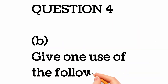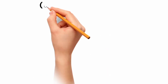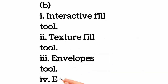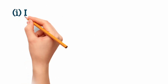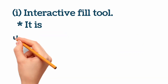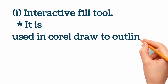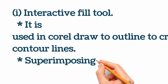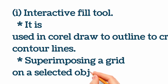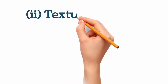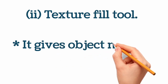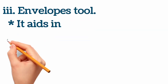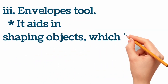Question 4b: give one use of each of the following tools. Part i: interactive fill tool — it is used in CorelDraw to create contour lines, superimposing a grid on a selected object. Part ii: texture fill tool — it gives objects a natural appearance. Part iii: envelope tool — it is used for shaping objects.